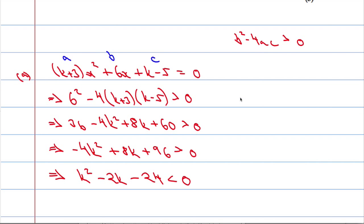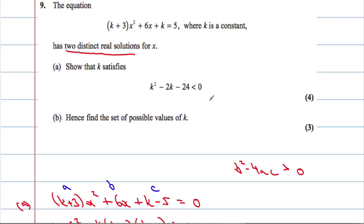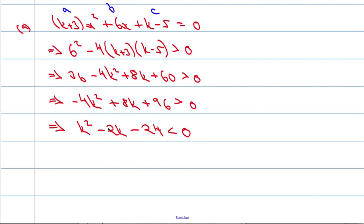So k² - 2k - 24 < 0, and that was exactly what we were trying to show. And part b, we need to find the set of possible values for k. In other words, we're going to have to solve this inequality.